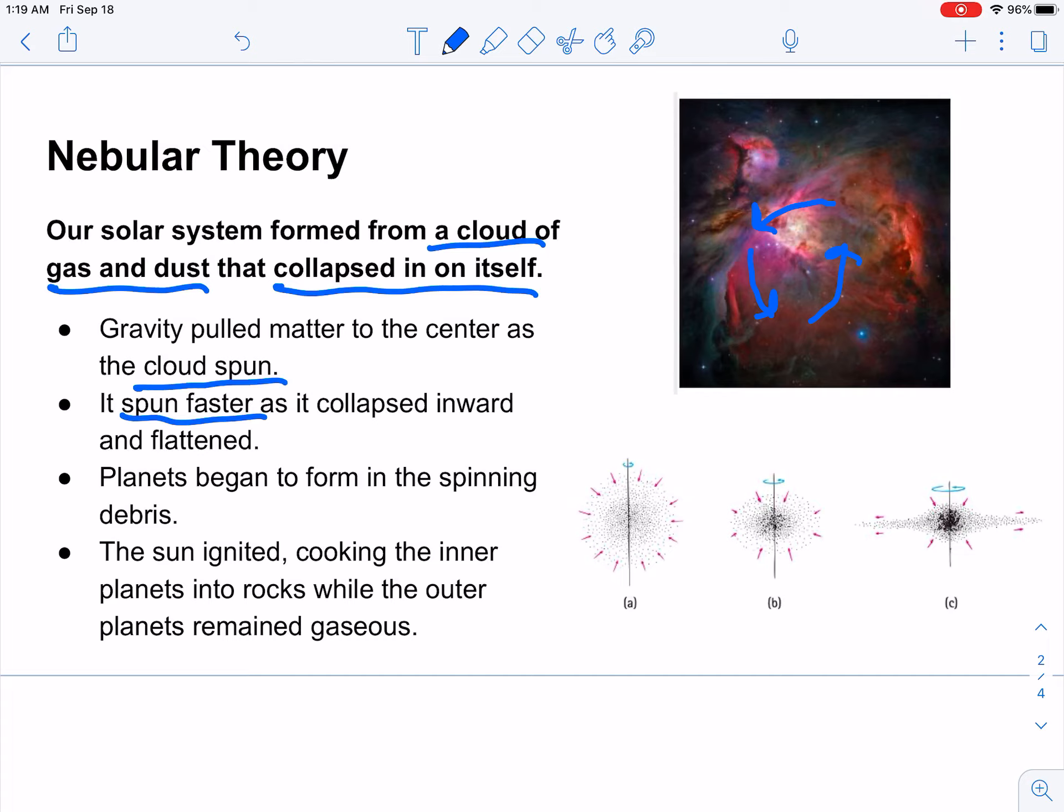So here's the fastest spin, and you can notice that it has flattened out. And this actually explains too, the planets begin to form in this spinning debris, which is why every single planet in our solar system orbits in the exact same direction.